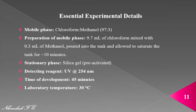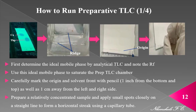The essential experimental details used for this experiment are as listed. There are steps to follow when running a Prep TLC. Before running a Prep TLC, you have to first determine the ideal mobile phase by analytical TLC. This image shows the analytical TLC of the reference standards — this is caffeine and this is theophylline. The mobile phase that gave this separation is what we are using for this Prep TLC.